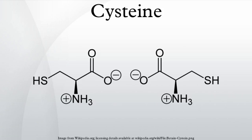Cysteine is an ionizable amino acid with the chemical formula HO2CCH(NH2)CH2SH. It is a semi-essential amino acid, which means that it can be biosynthesized in humans. The thiol side chain in cysteine often participates in enzymatic reactions, serving as a nucleophile. The thiol is susceptible to oxidation to give the disulfide derivative cystine, which serves an important structural role in many proteins. When used as a food additive, it has the E number E920.